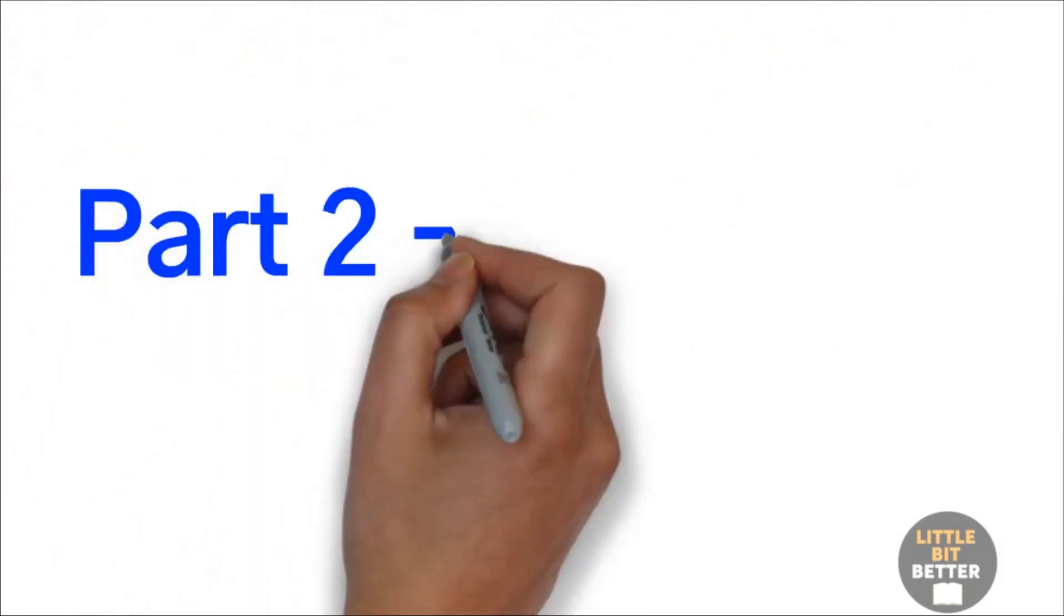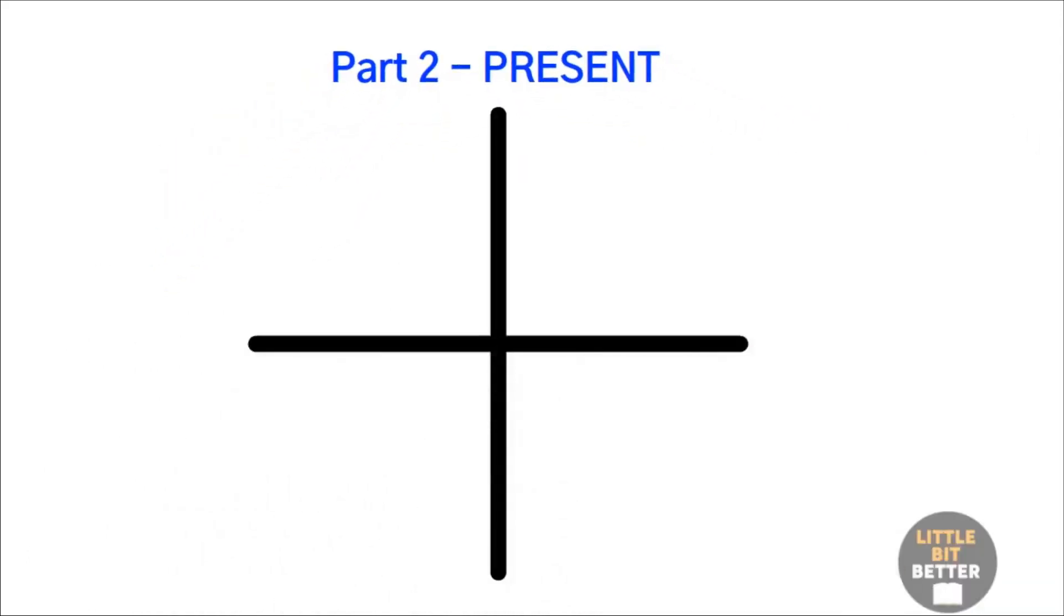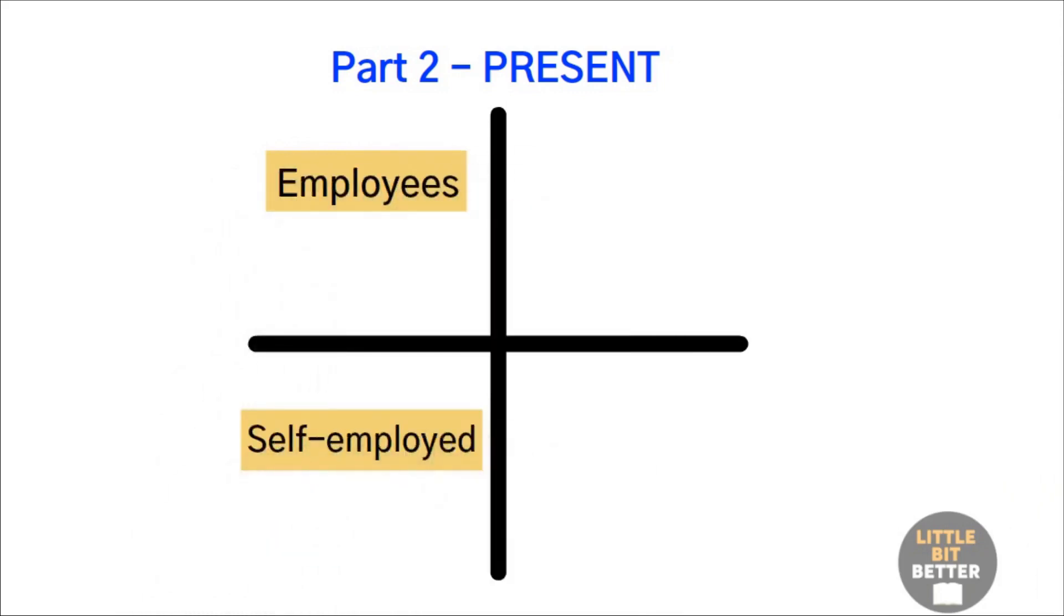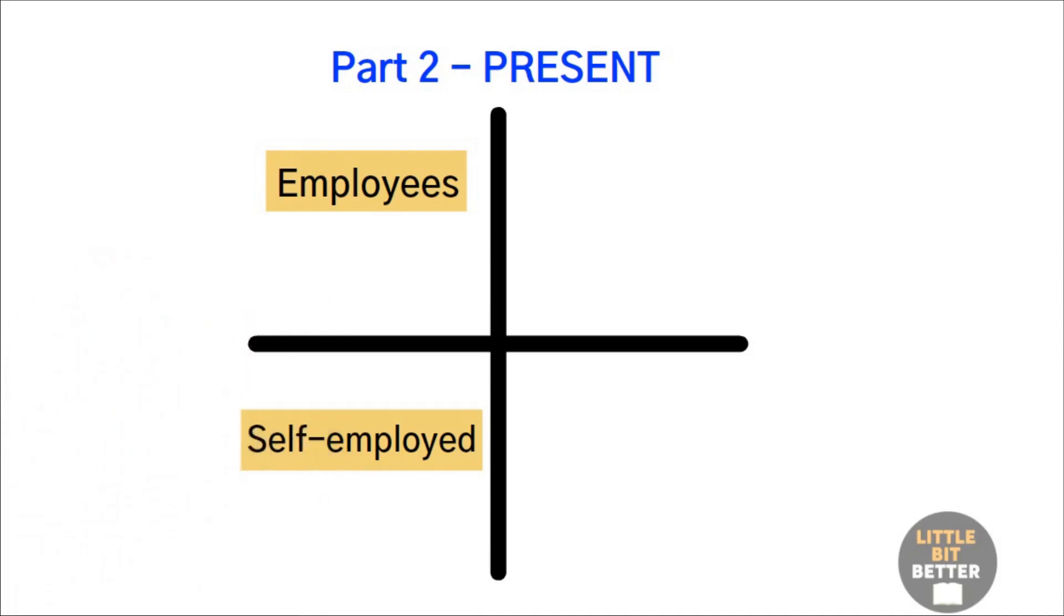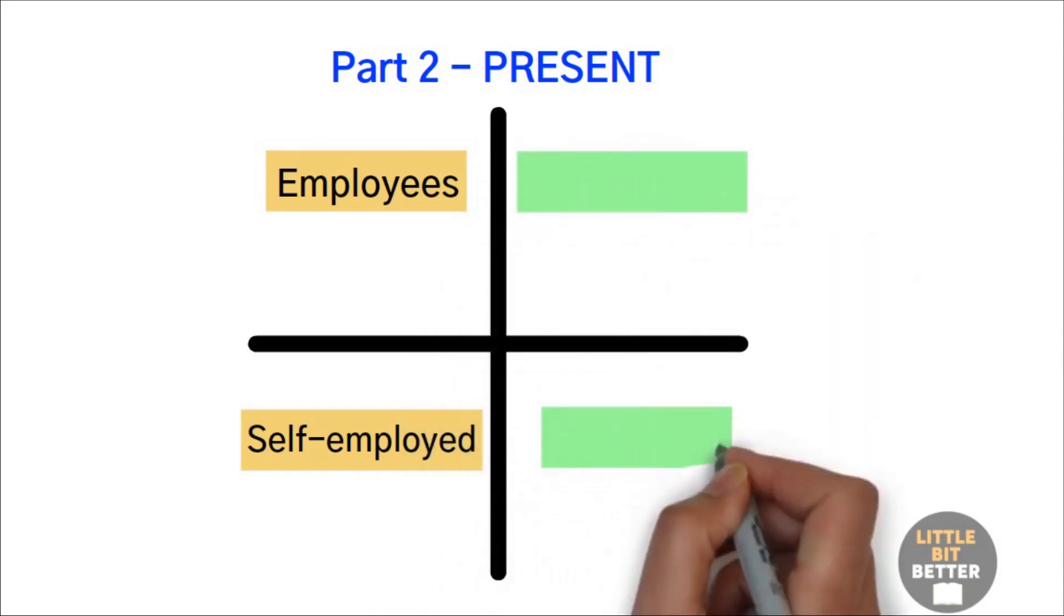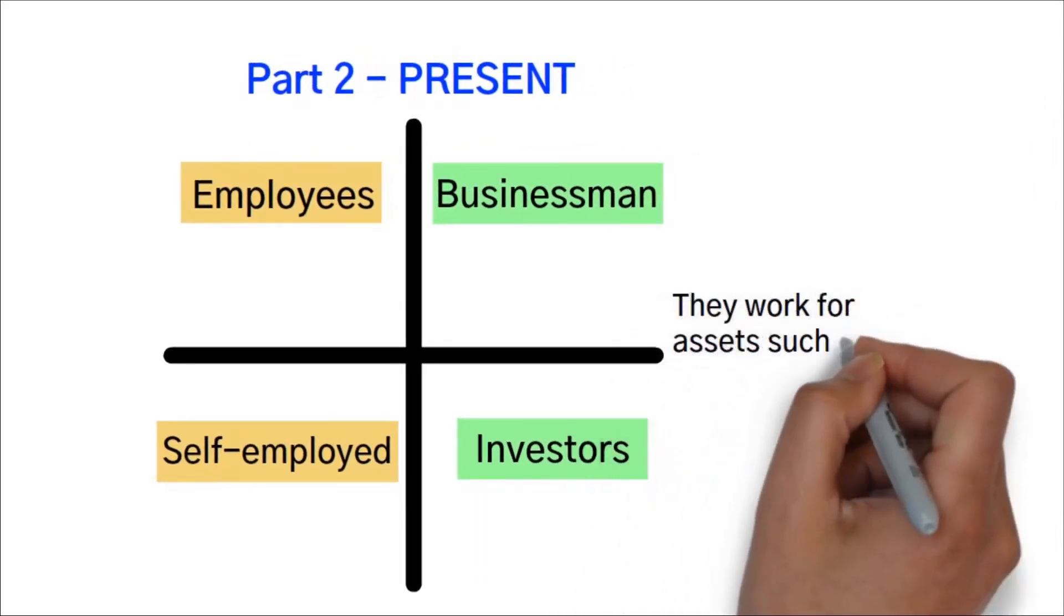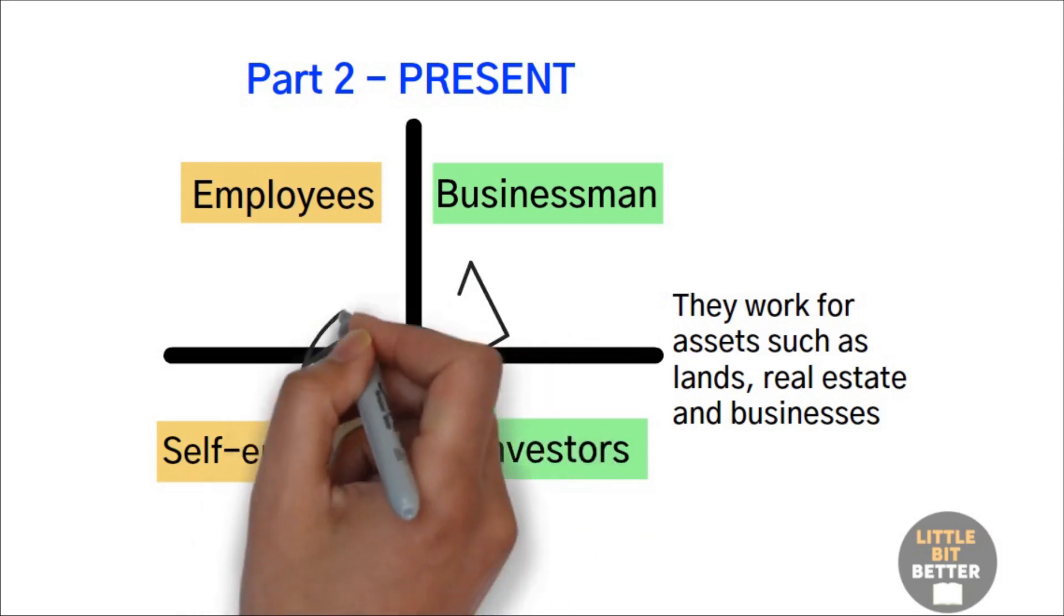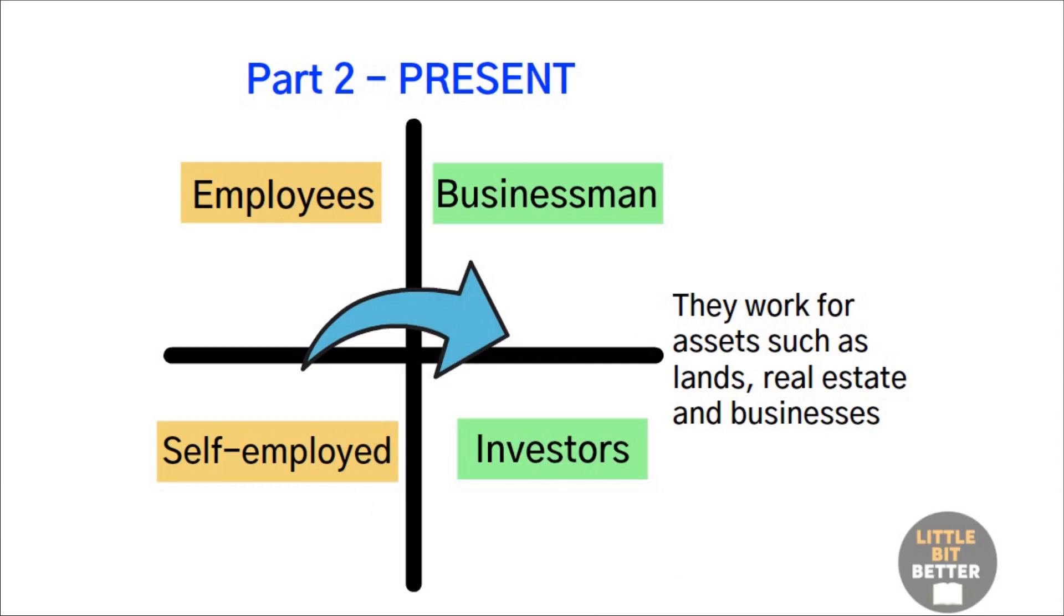Part 2. Present. When crises happen, people who suffer the most are the ones on the left side of the cash flow quadrant, employees and self-employed. Because these are the people who work for money and they will be the first ones to lose. True wealth is on the right side of the cash flow quadrant. People on this side don't work for money. They work for assets, such as land, real estate, and businesses. The author recommends transitioning from the left side of the cash flow quadrant to the right side, where true wealth exists.